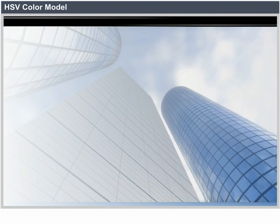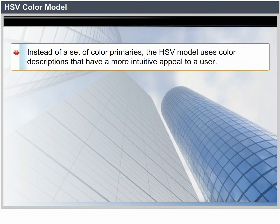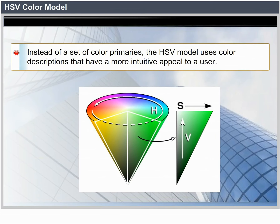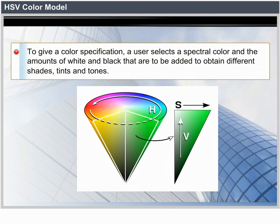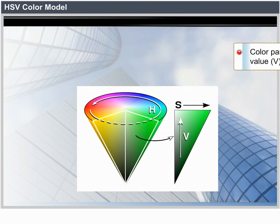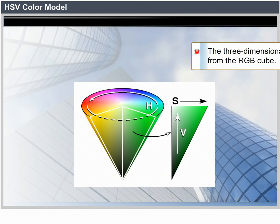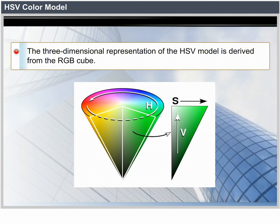HSV color model. Instead of a set of color primaries, the HSV model uses color descriptions that have a more intuitive appeal to a user. To give a color specification, a user selects a spectral color and the amounts of white and black to be added to obtain different shades, tints, and tones. Color parameters in this model are hue H, saturation S, and value V. The three-dimensional representation of the HSV model is derived from the RGB cube.